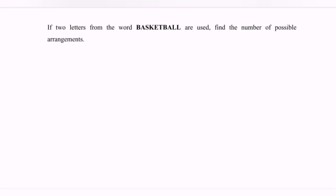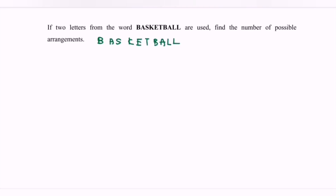Hello everyone, welcome to my channel. In this video I'm going to discuss an example for permutations. Given the situation: if two letters from the word 'basketball' are used, find the number of possible arrangements. The keyword here is 'arrangement.' In the word basketball, we have a total of n equals 10 letters.